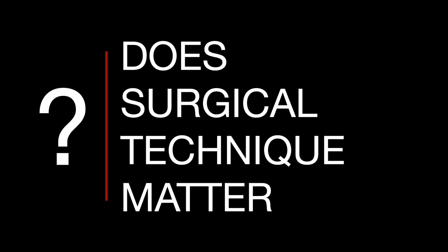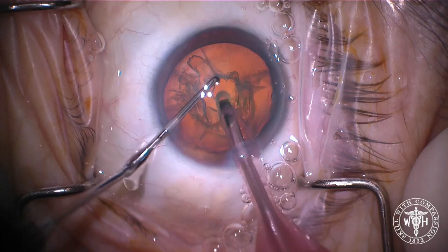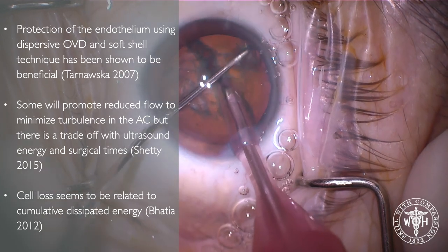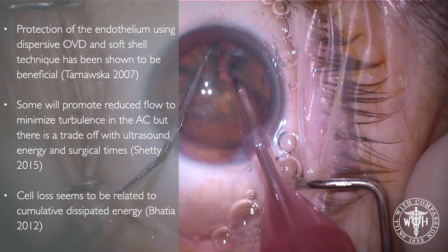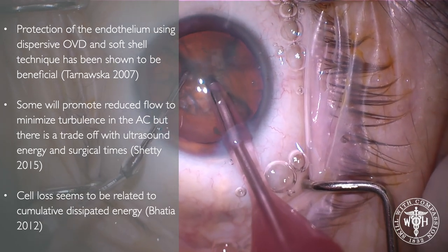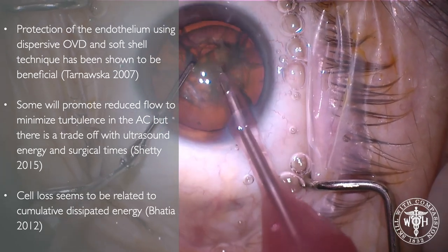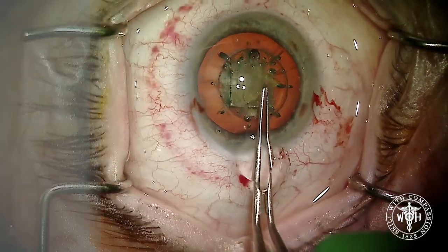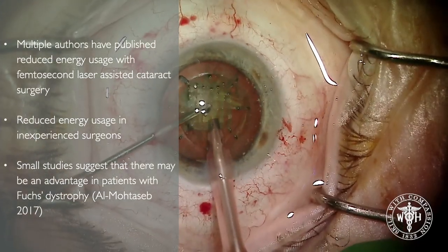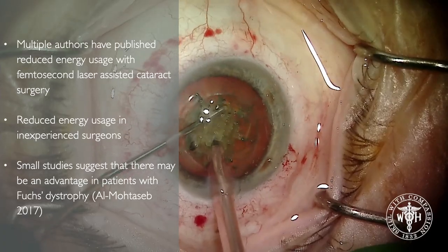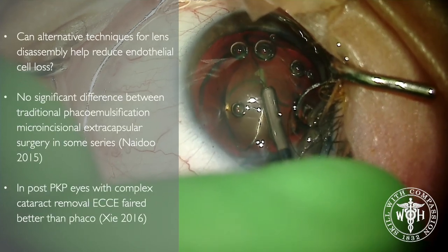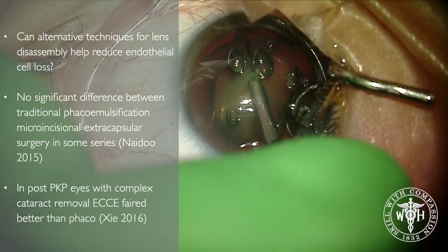Does surgical technique matter? Can we impact things? I think the answer is yes. Anything that seems to save endothelium is probably a good idea — repeated placement of OVD, the soft shell technique, trying to keep the flow relatively low because high-flow situations also damage endothelium, and of course trying to keep the CDE low can be helpful. Here's the magic of the femtosecond laser — can we use technology to the rescue? The answer is maybe. There are some pretty good publications showing less energy with femtosecond and saving of endothelial cells, versus non-phaco type procedures using endocapsular nuclear disassembly. If it reduces your CDE, there probably is some benefit.